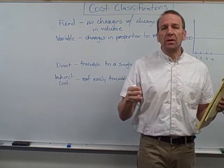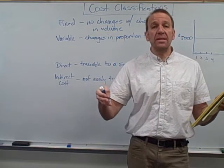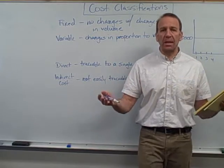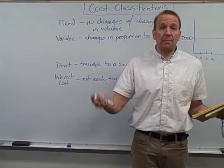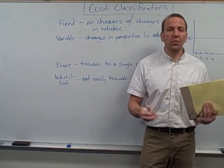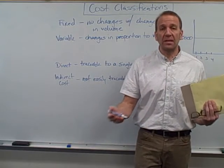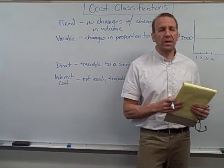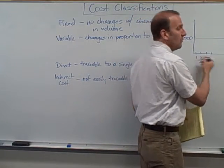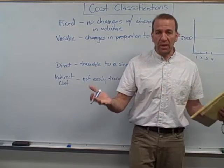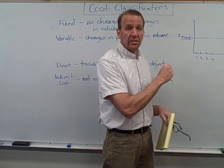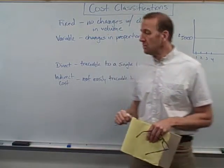Now I do have to point out that that's within the relevant range. At some point, we can only manufacture — let's say — ten thousand tables in a month. We can't manufacture any more; the facilities aren't big enough. If we had demand for fifteen thousand tables, we'd have to find another place to rent, maybe for five thousand dollars more. So within the relevant range — meaning one to however many we can manufacture in that time period — the cost is fixed.